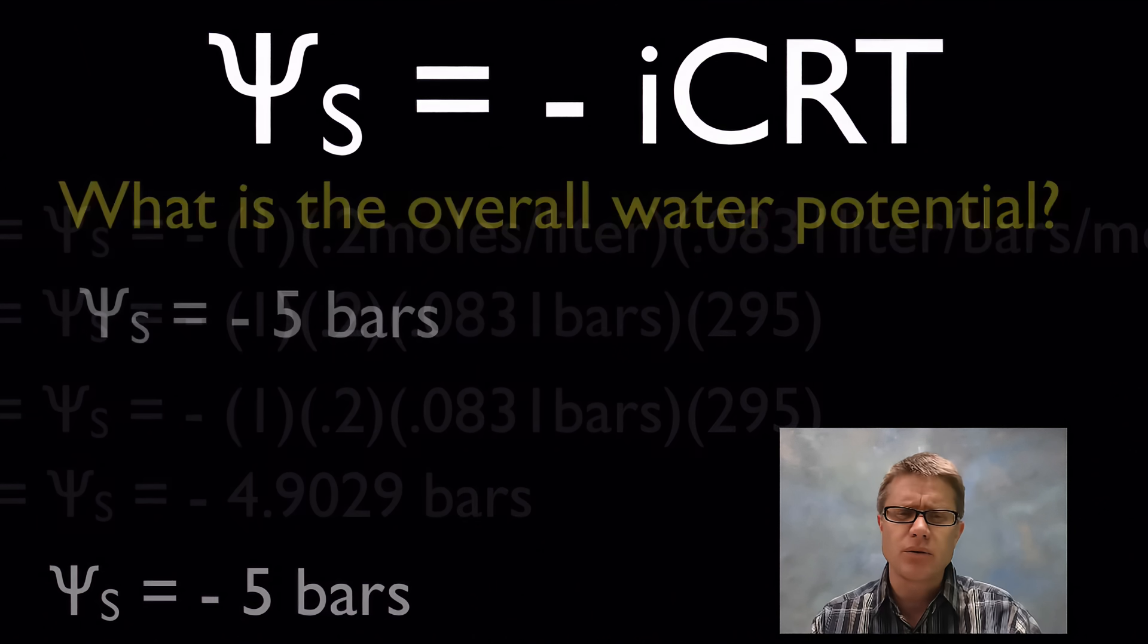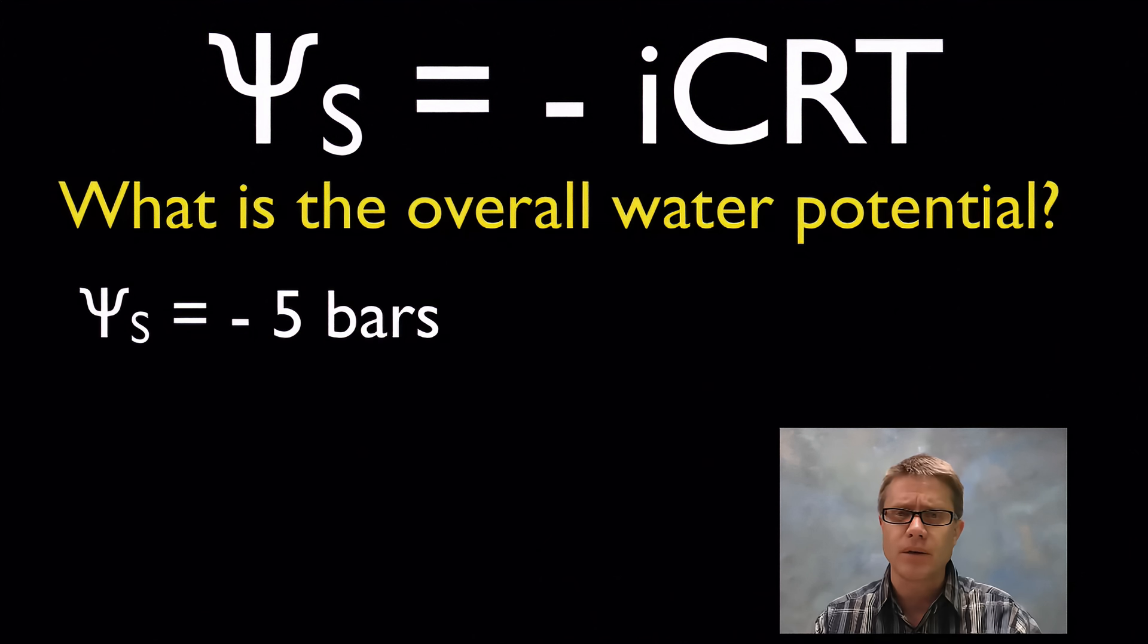But they could also ask you this question: What's the overall water potential? We're going to have to think about this a little bit. We've got the solute potential, and again that's going to be half of this water potential. What's the other half? It's on pressure. How much pressure are we going to have on a beaker that's open? We're going to have zero pressure on it. So if I want to figure out my overall pressure I'm just going to add those together. So it's also going to be negative 5 bars.